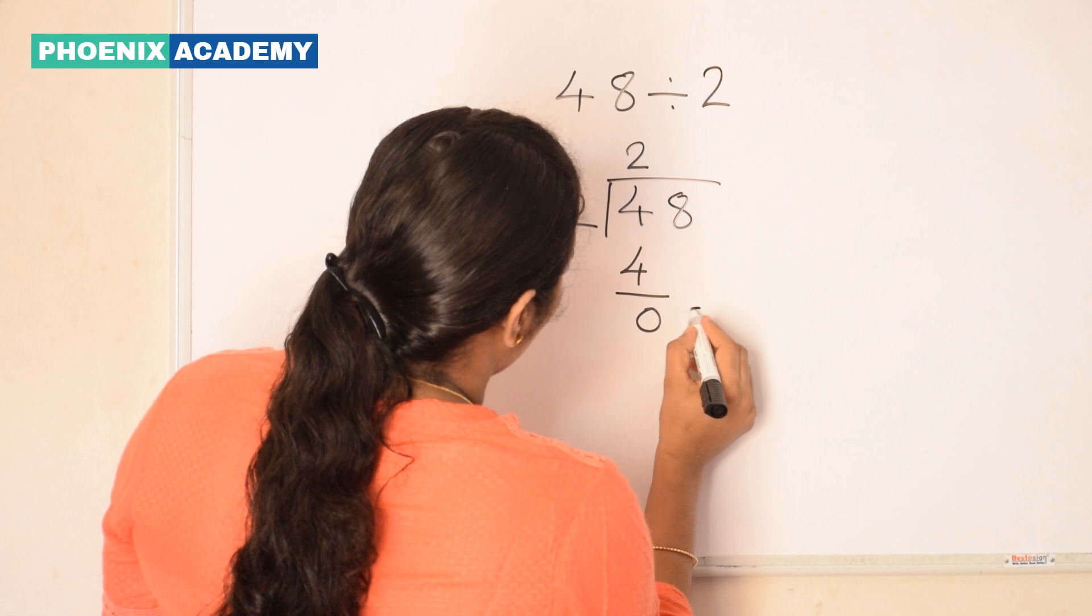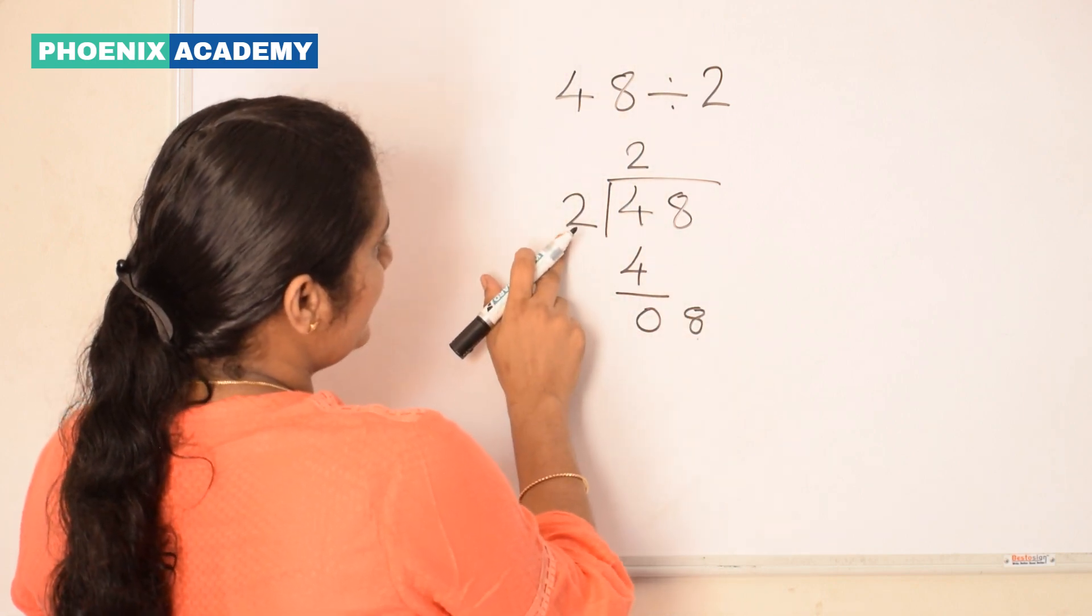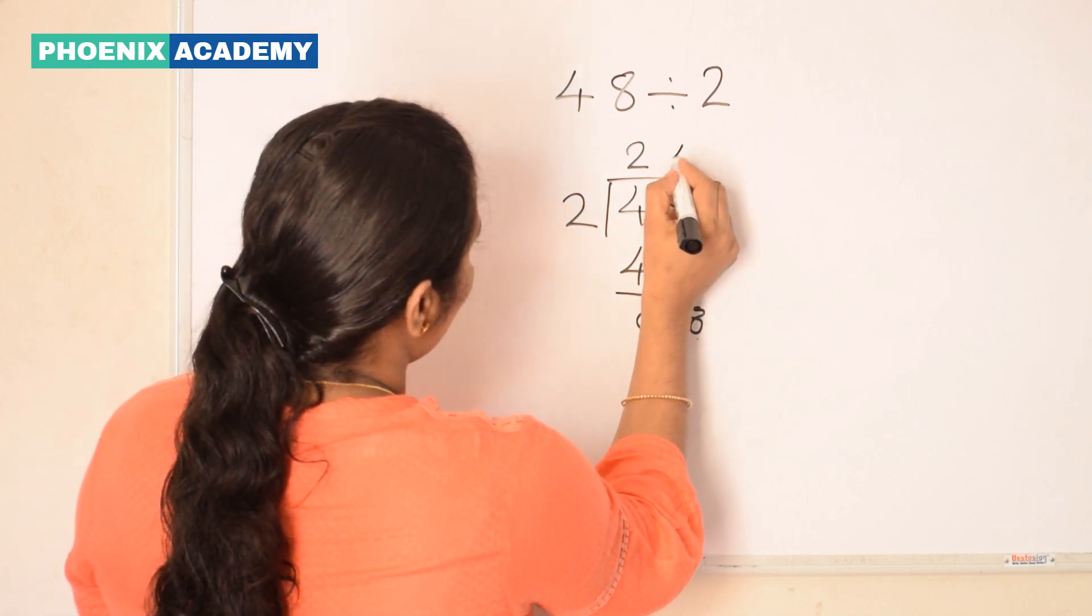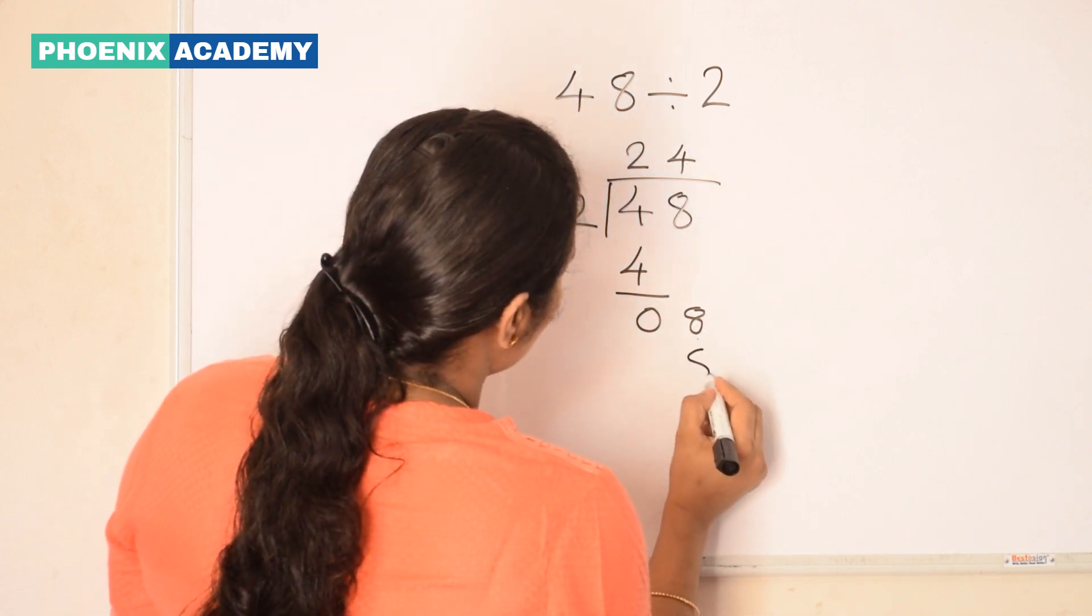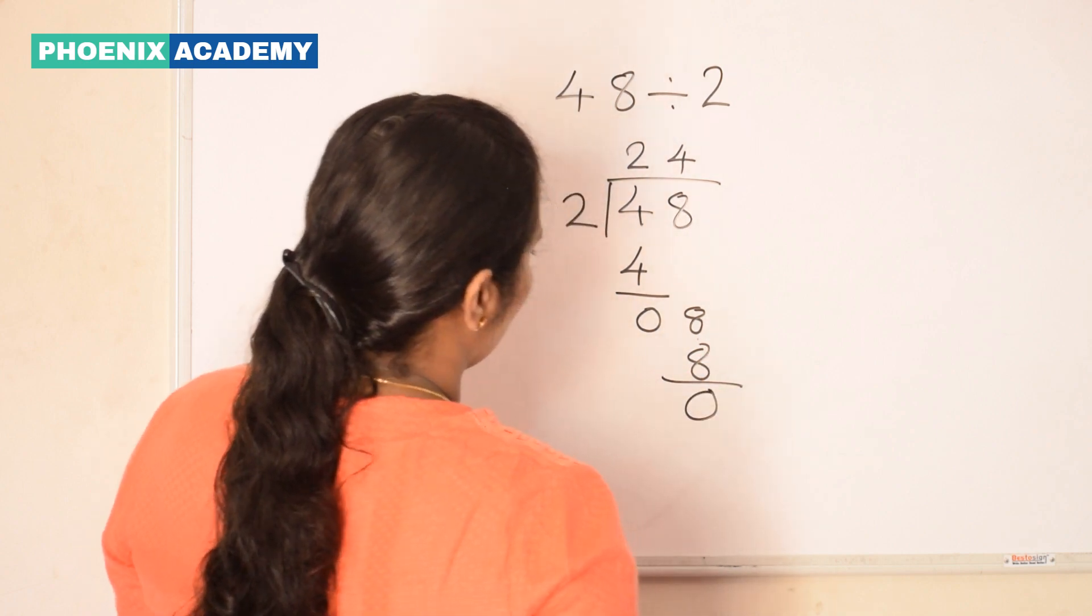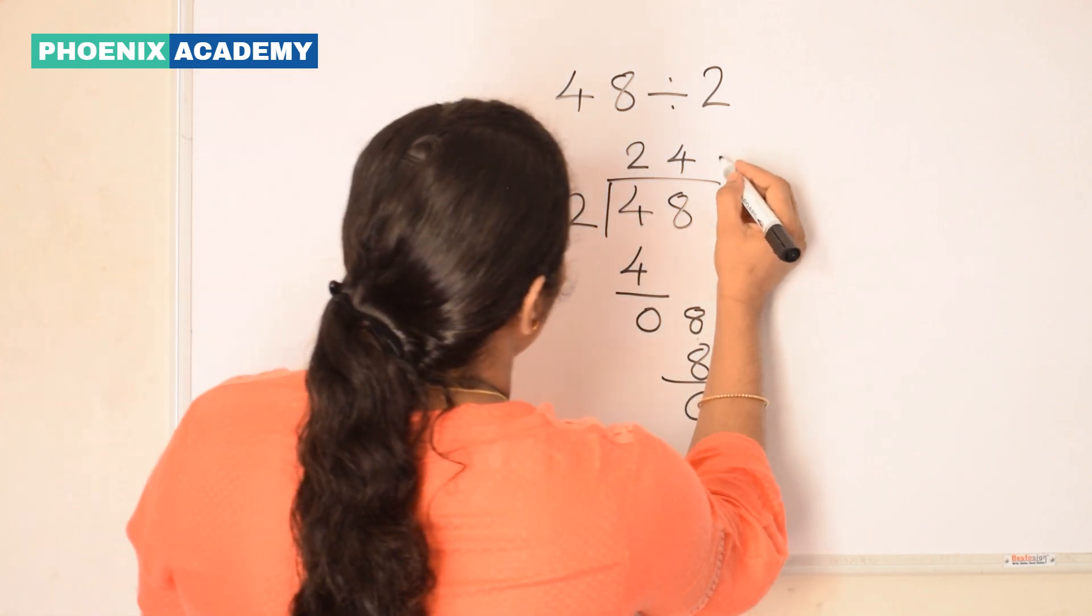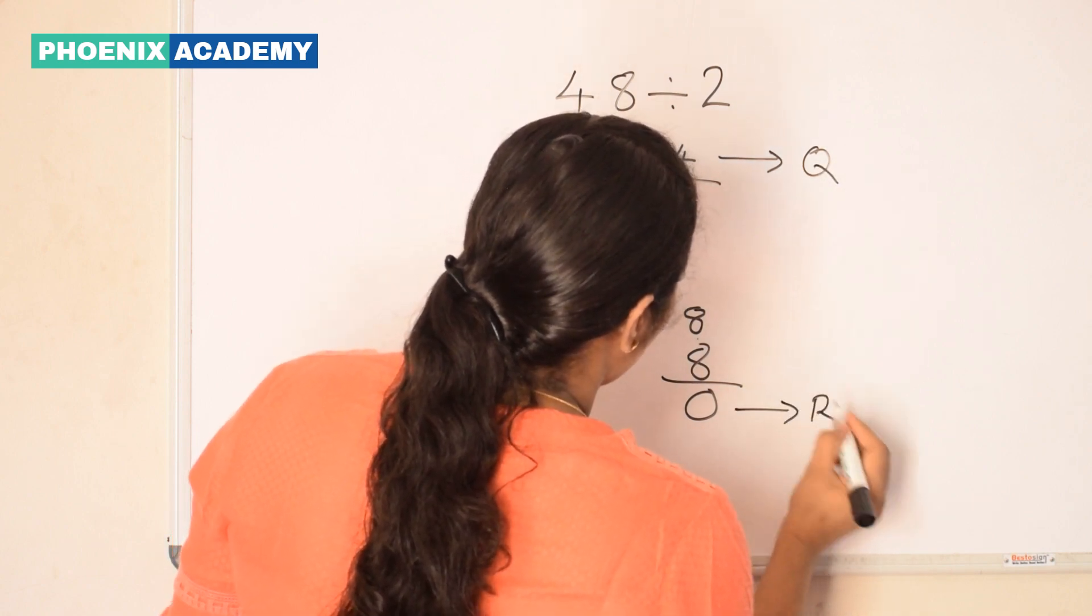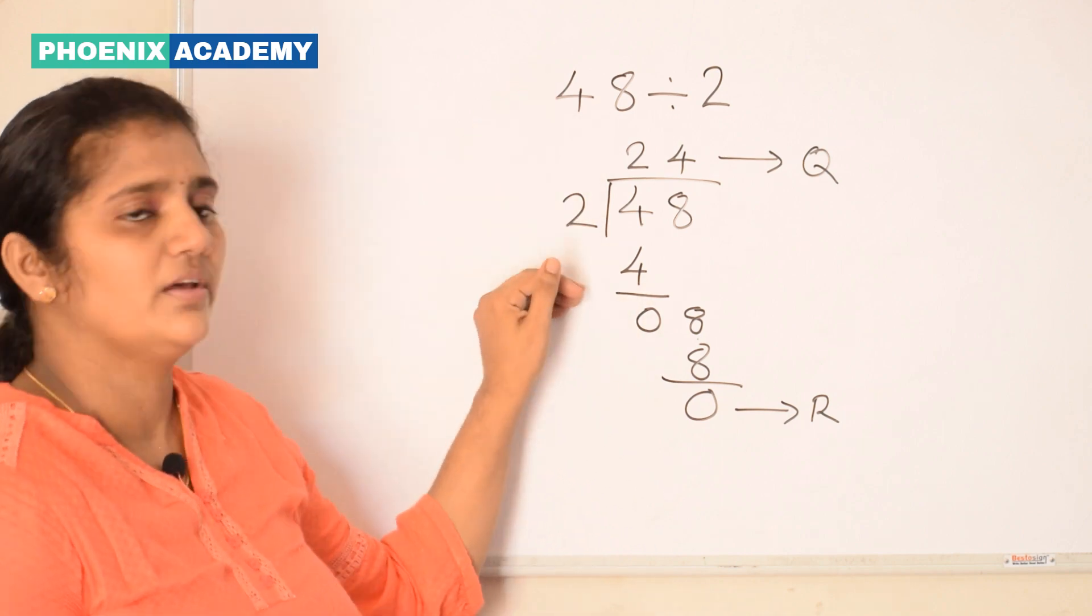Bring down the ones digit, then divide the ones digit by divisor. 8 divided by 2. 2 fours are 8. 4 we write at quotient's place and 8 we write below the dividend and subtract. We get 0. So here we get 24 as the quotient, 0 as the remainder. This is how we are doing division without regrouping.